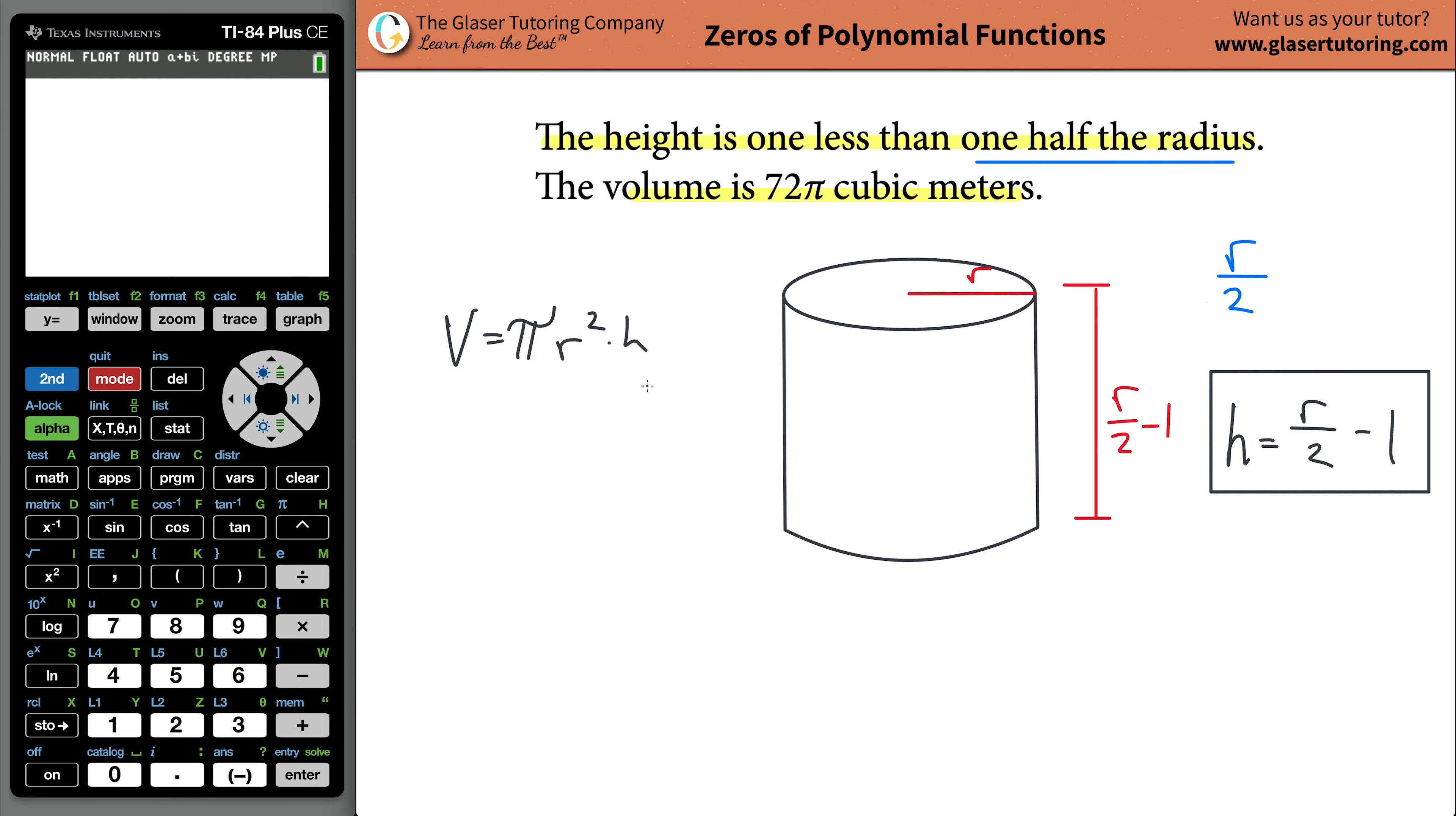So the volume of a right circular cylinder is going to be equal to π times the radius squared times height. So the volume they told us is going to be 72π. That's going to equal π times the radius squared, which you defined as just R, times then the height, well, the height is now R over two minus one.